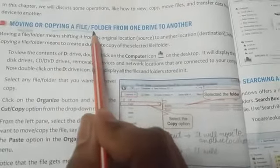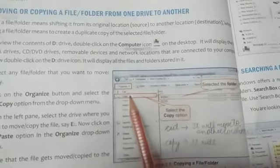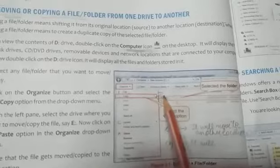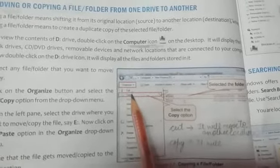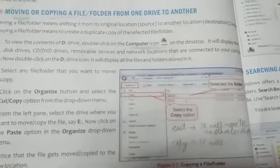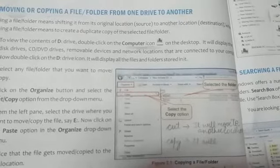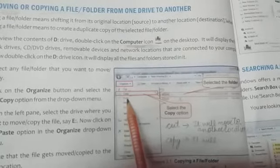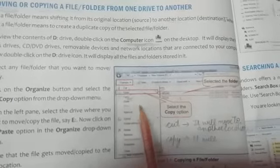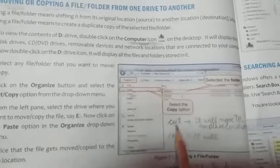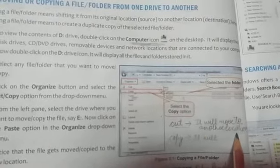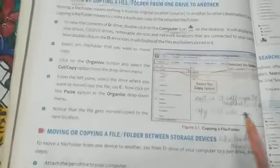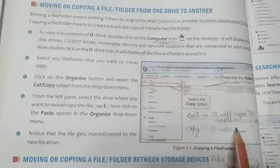If we want to copy a file or folder, there is the copy option. We click on copy — this keeps the file in the same place and also places it in the new location. We select the file, click on the organize button, select the copy option, then navigate to the new location, click organize again, and select paste. The file will be copied to the new location. So, cut is used to move a file and copy is used to duplicate it to another place.